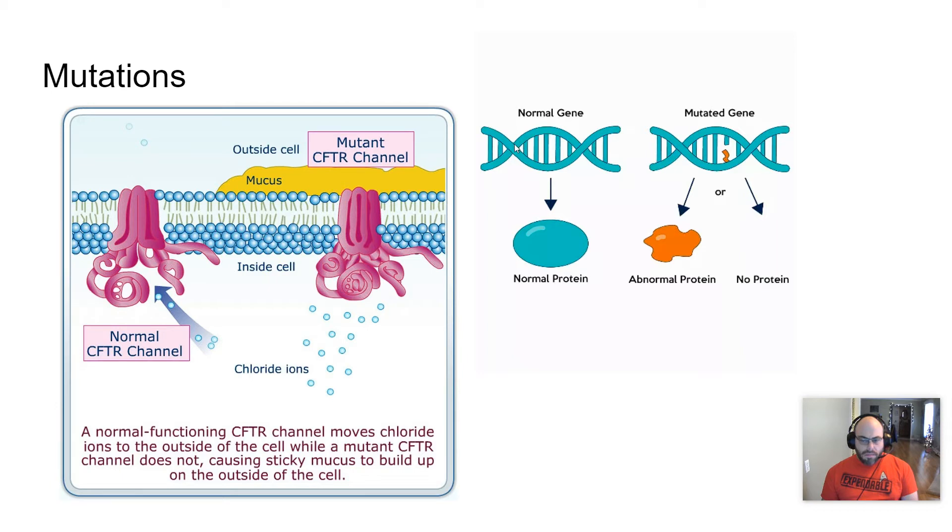The normal gene, because genes are on the DNA, DNA codes for proteins, protein shape determines their function. A normal gene creates a normal shape protein that functions appropriately. A mutated gene creates an abnormally shaped protein that does not function properly.